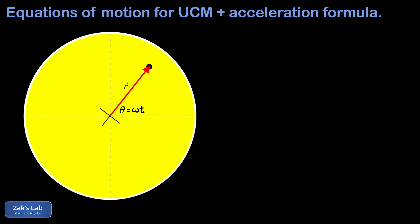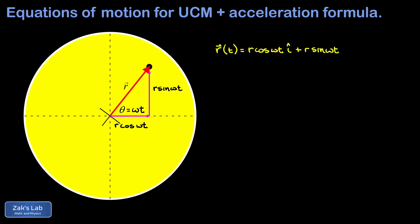Now we can decompose our position vector into its x and y components. The magnitude of the x component is given by the hypotenuse multiplied by the cosine of the angle, so we write that as r cosine omega t. The magnitude of the y component is r sine omega t. This allows us to write the position vector in î ĵ notation: the position vector as a function of time is r cosine(ωt) î plus r sine(ωt) ĵ. That's our first equation of motion for uniform circular motion kinematics — it tells us the position of the black spot as a function of time.